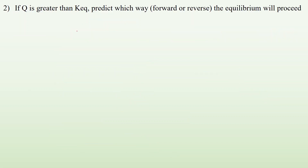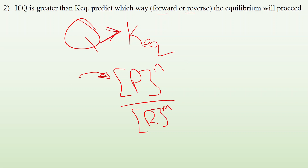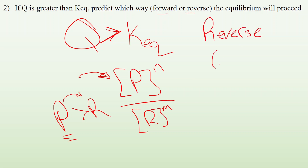Number two: if Q is greater than Keq, predict which way — forward or reverse — equilibrium will proceed. Since the expression is products over reactants, if Q is greater than Keq, that tells you you have more products than you're supposed to have at equilibrium. So if there are too many products, the reaction will shift to make more reactants — it shifts to the reverse, or to the left, going from products back towards reactants.